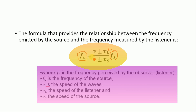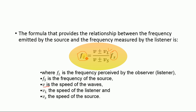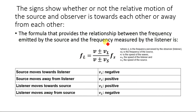There are two kinds of shifts: the red shift and the blue shift. When we hear a higher frequency than that produced by the source, that is a blue shift. When a decrease occurs and we hear a lower frequency than that produced by the source, we call it a red shift. The signs indicate whether the relative motion of the source and observer is toward each other or away from each other.